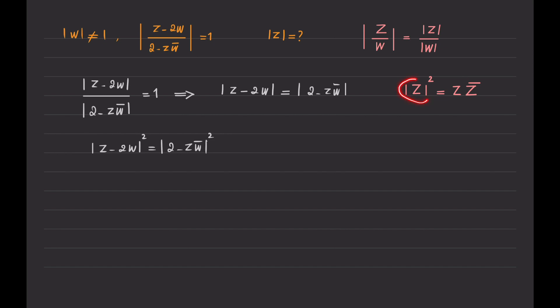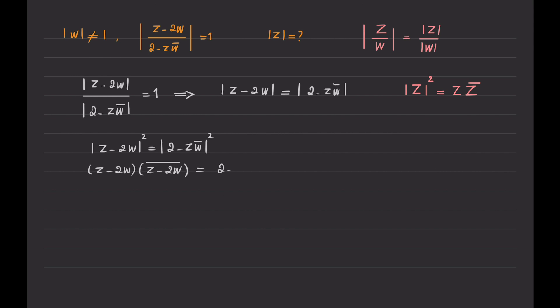Now, the absolute value of any complex number squared is that complex number multiplied by its conjugate. So the left-hand side can be written as z minus 2w multiplied by the conjugate of z minus 2w. On the right-hand side, the same: 2 minus zw bar multiplied by the conjugate of 2 minus zw bar.